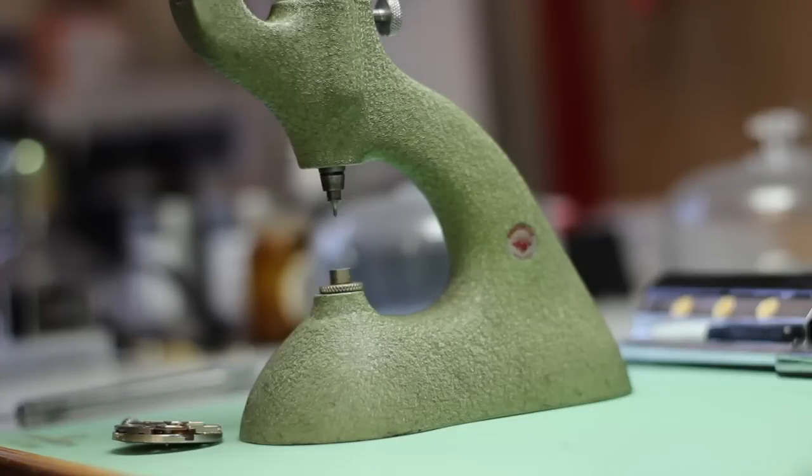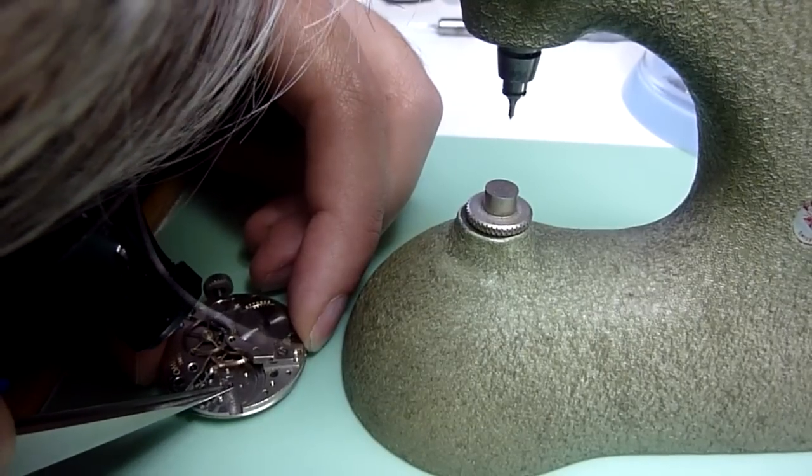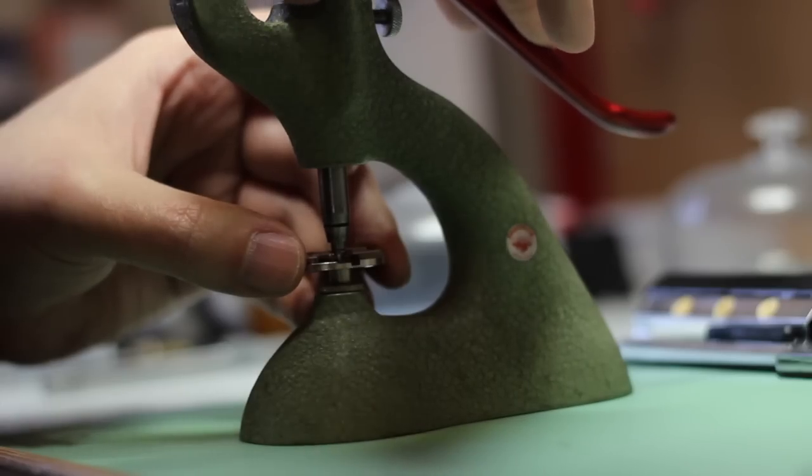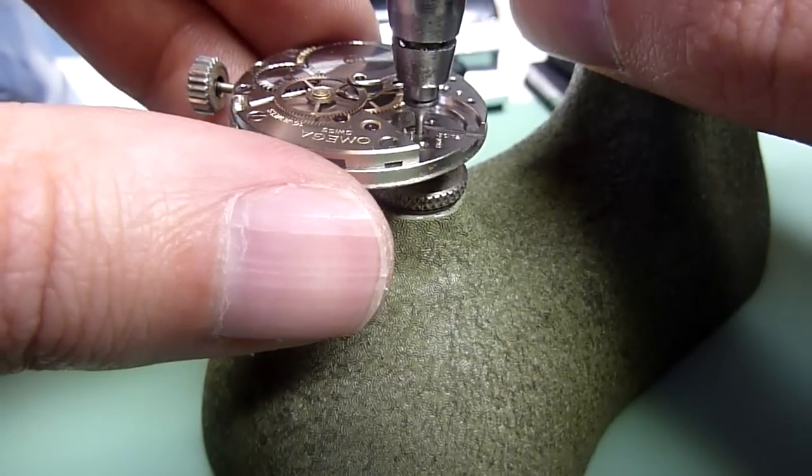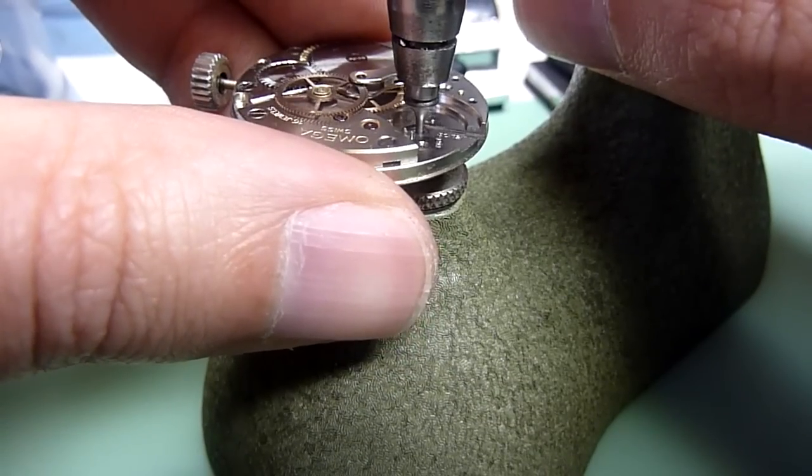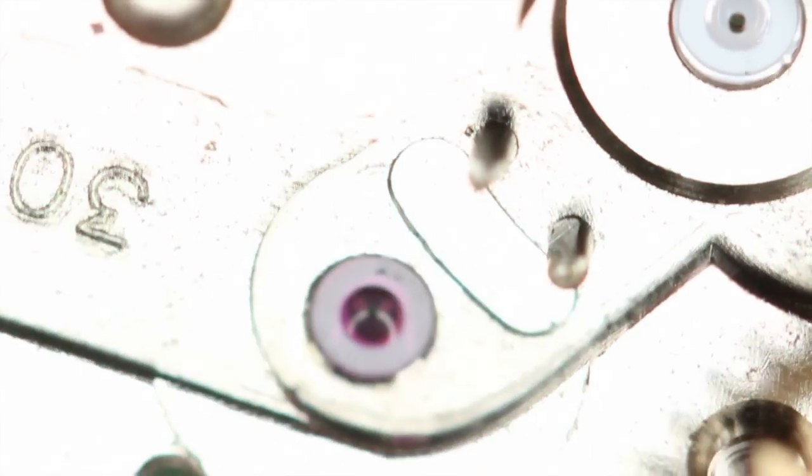Once we've determined the correct depth we're ready to press in the jewel. Placing the jewel squarely over the hole in the base plate we line it up and firmly press the jewel into place. Here's a close-up shot of the new jewel correctly fitted.